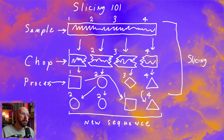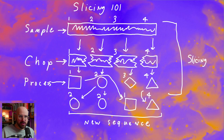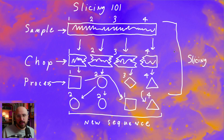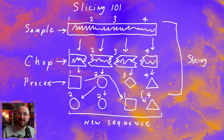You essentially set up a preset that takes a sample, divides it however you would like, and then processes it in the way that you want. And so something that used to take several steps, if you just front load the work and save the preset, can happen instantaneously. And the best part about it is that slicing like this is easy to do.